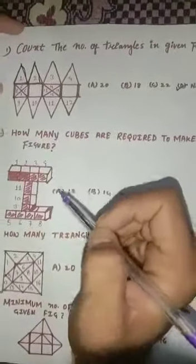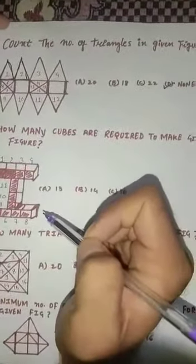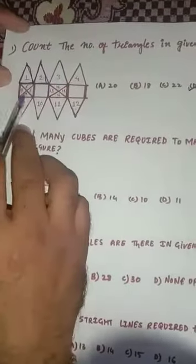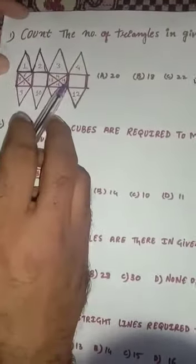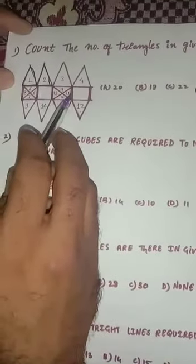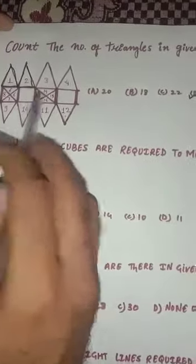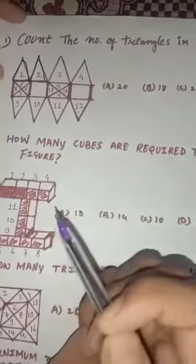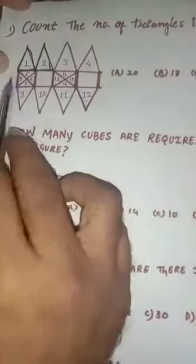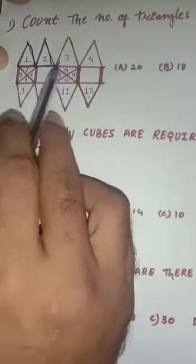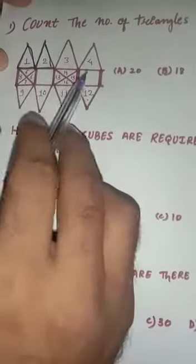Now the next question says to count the number of triangles in the given figure. A figure is already given and we have to count how many possible triangles are there. First, let's observe this figure and see how many triangles we can easily find out.